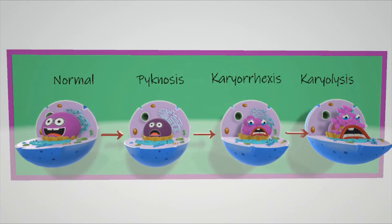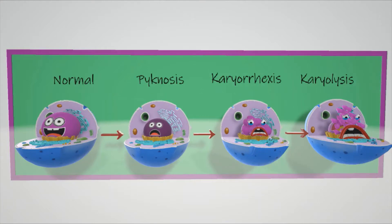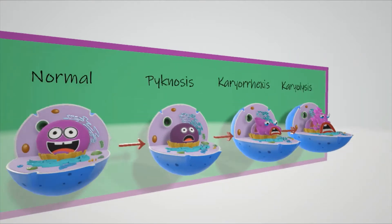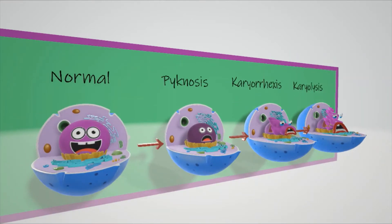In this video we're going to talk about three important terms: pycnosis, karyorexis, and karyolysis. Here's a normal cell. One of the hallmarks of cell death is loss of the nucleus. The nucleus doesn't just explode — rather it goes through a process. The process of the loss of the nucleus is threefold: pycnosis, karyorexis, and karyolysis.